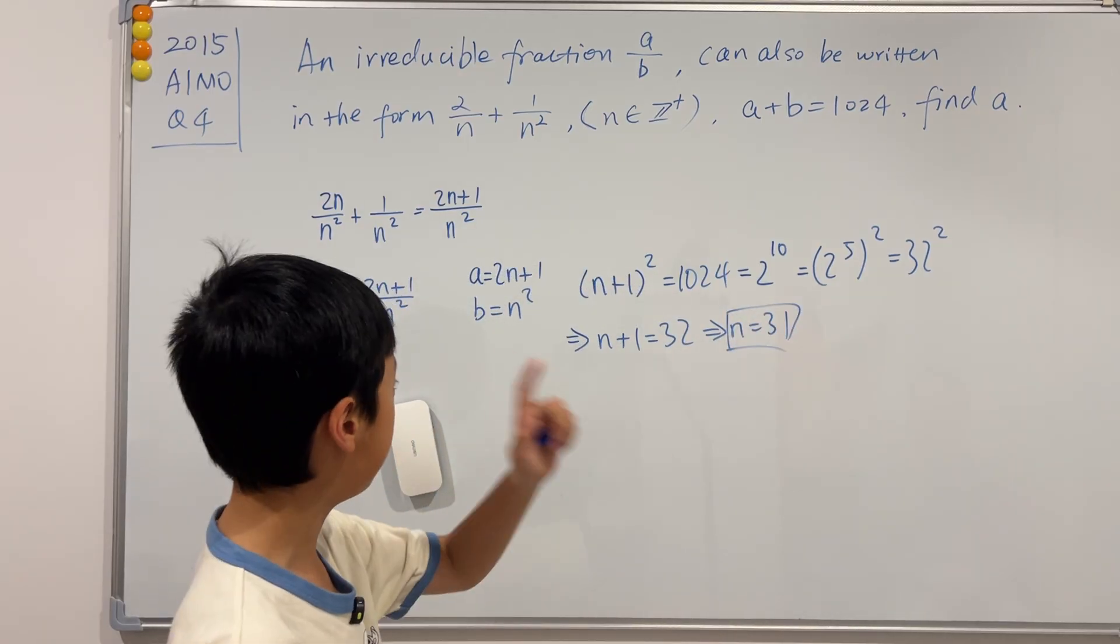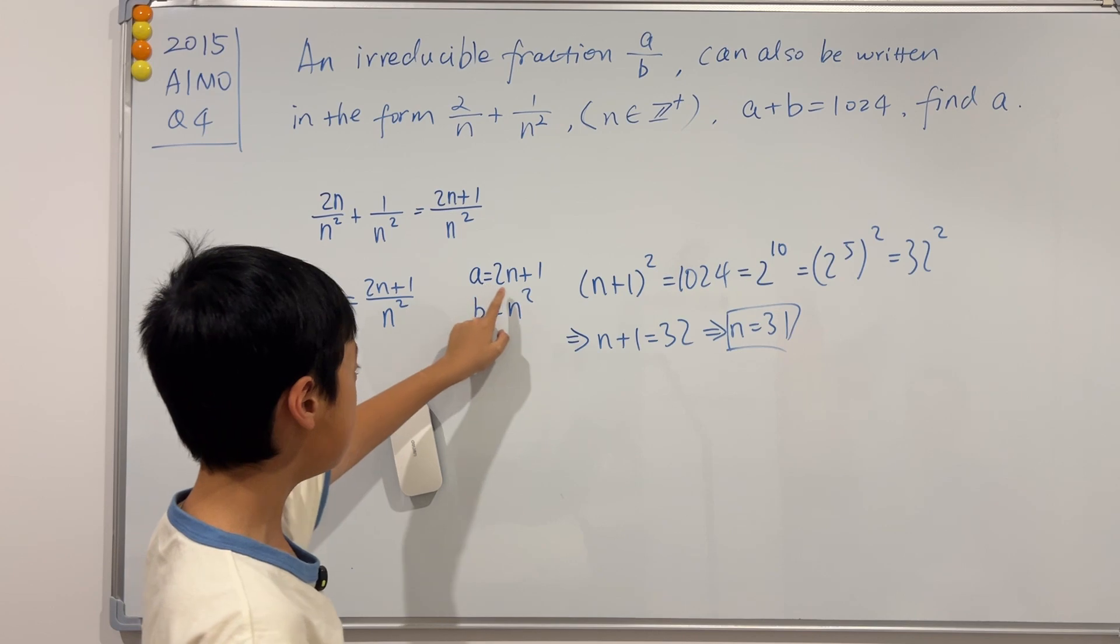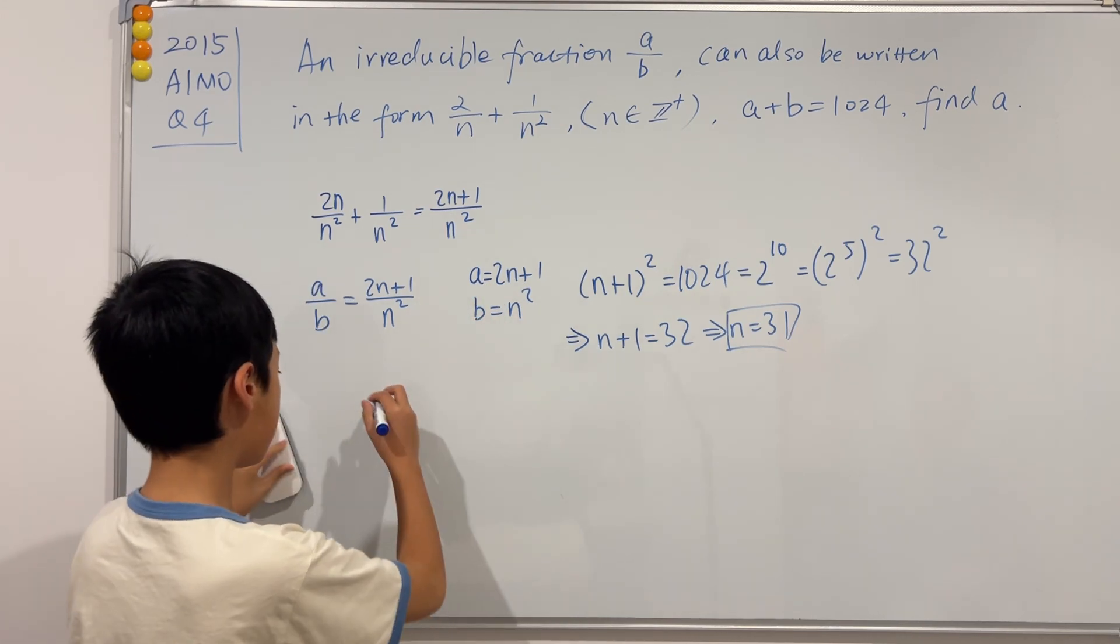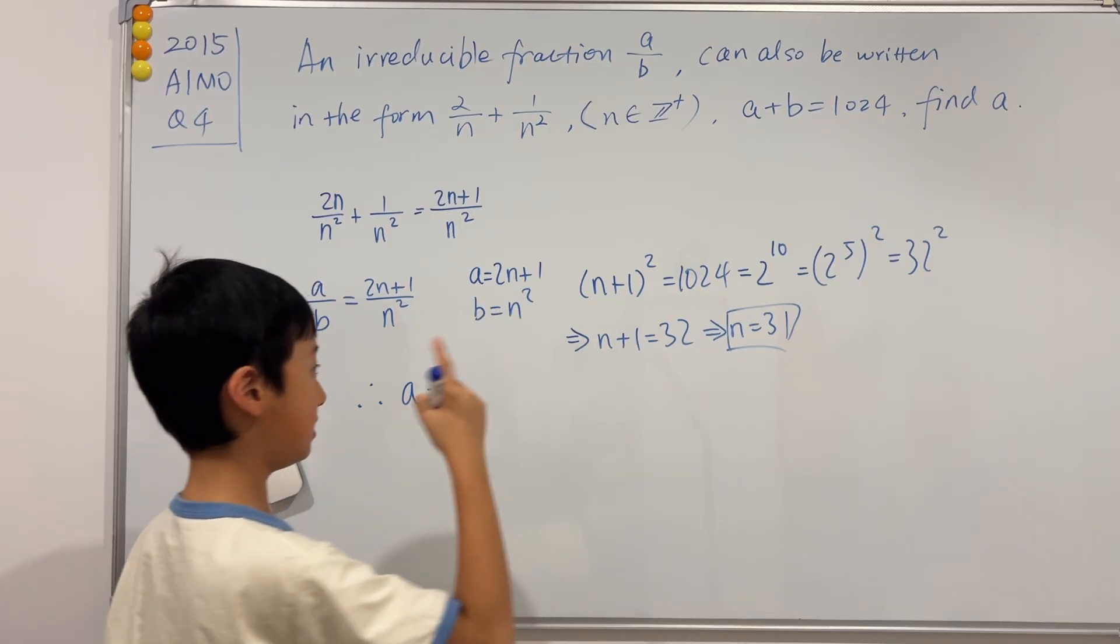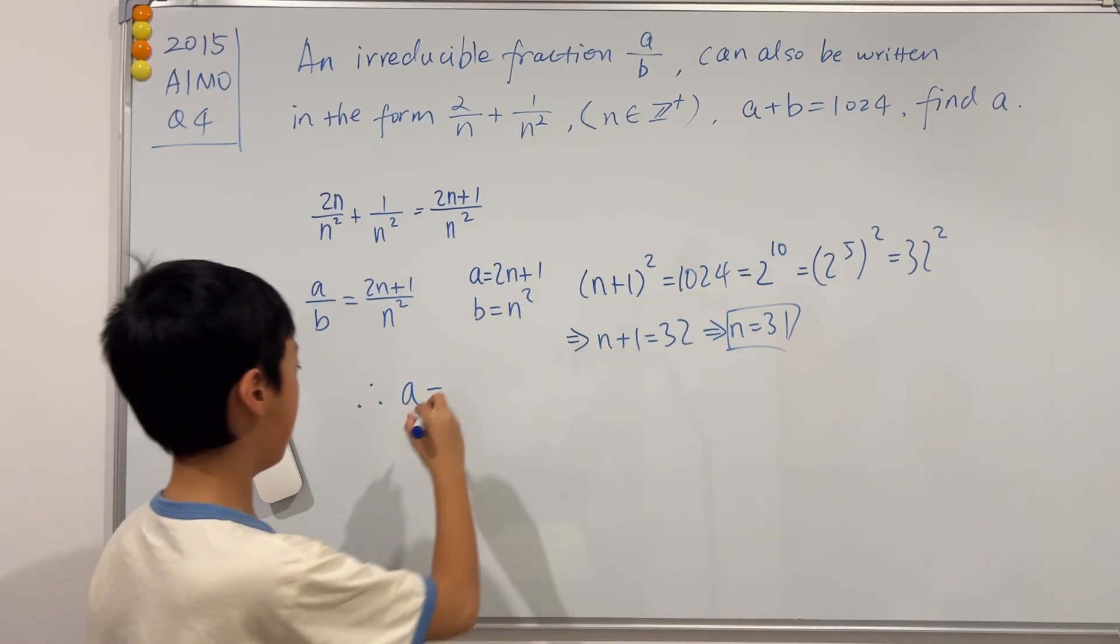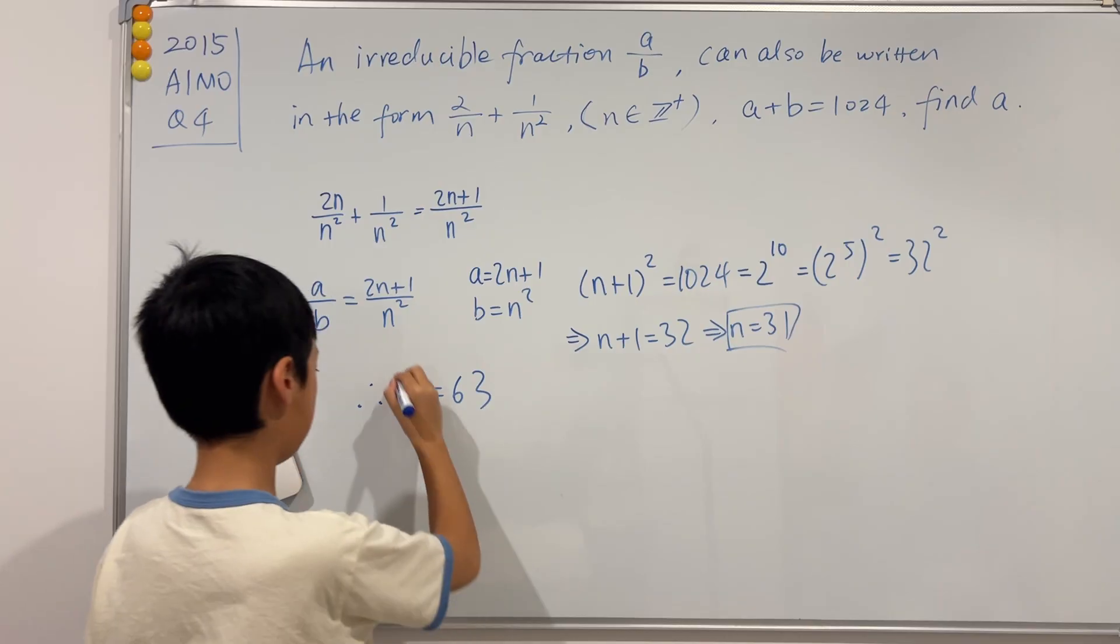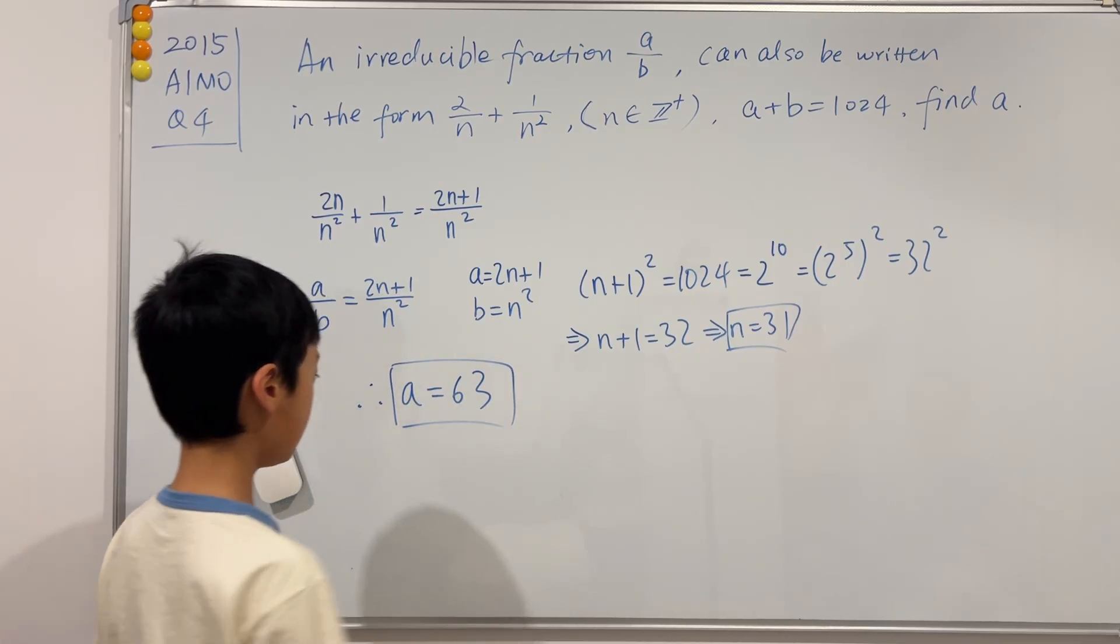Now, the question is asking us for A. And we know A is 2N plus 1. So we can see that A is just 2 times 31 is 62 plus 1 is 63. Done.